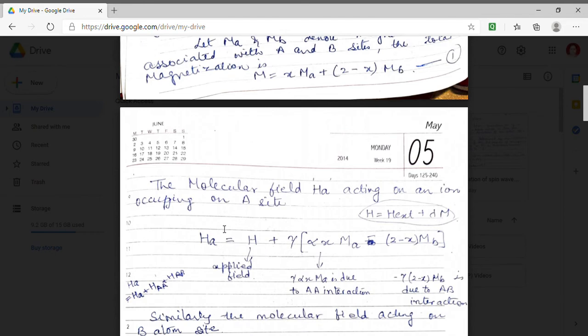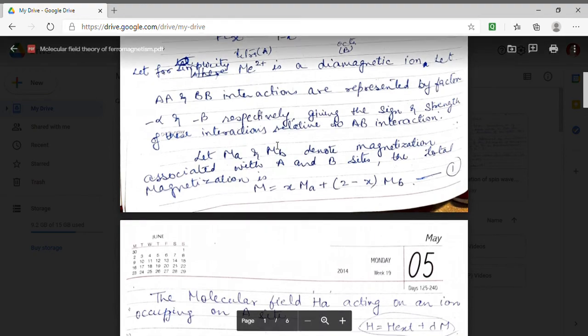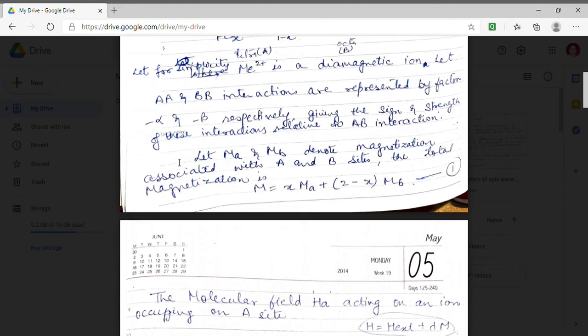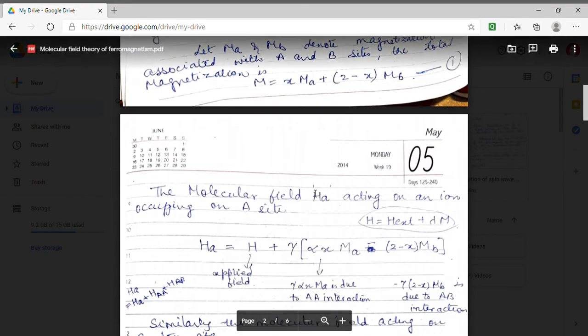HA equal to external applied field capital H plus gamma due to A interaction because at A site the concentration is X and we have taken the parameter factor denoted by alpha for A-A interaction. So we have taken alpha X MA.